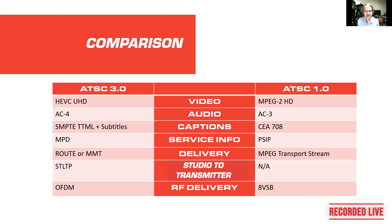The audio in the US is going to be the AC4 format, which supports up to 10.1 surround sound, as opposed to the AC3 used currently with ATSC 1.0 that only supports 5.1. Another feature relates to captions — they're not just plain text characters. They can include graphics, different fonts, different colors, different styles, and different languages, providing more variety in subtitles.